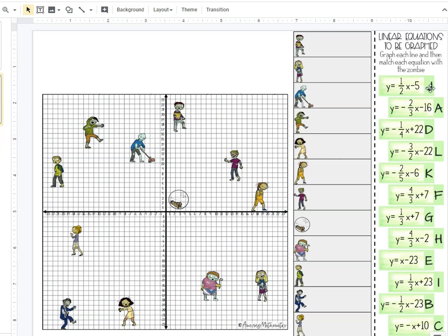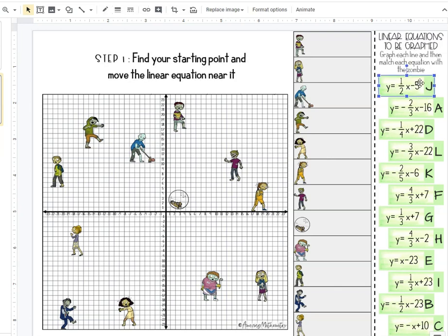I'm going to look at my equation which is in slope-intercept form and find my starting point, which will be negative 5 on the y-axis because that is my y-intercept. I'm going to grab my equation and drag it down near negative 5 on the y-axis, and you'll see why in just a moment.